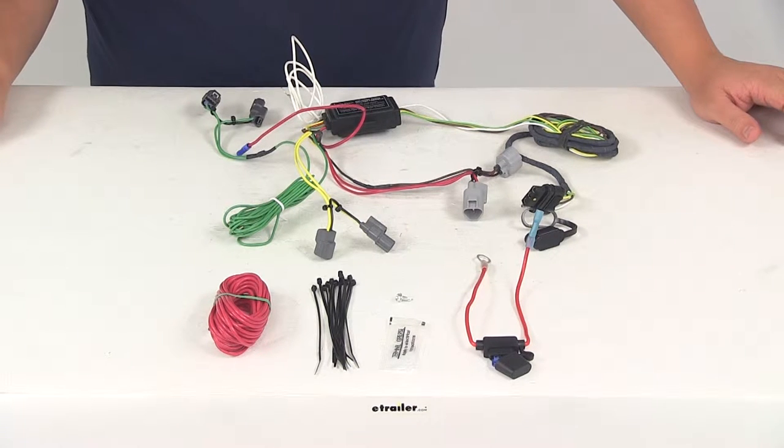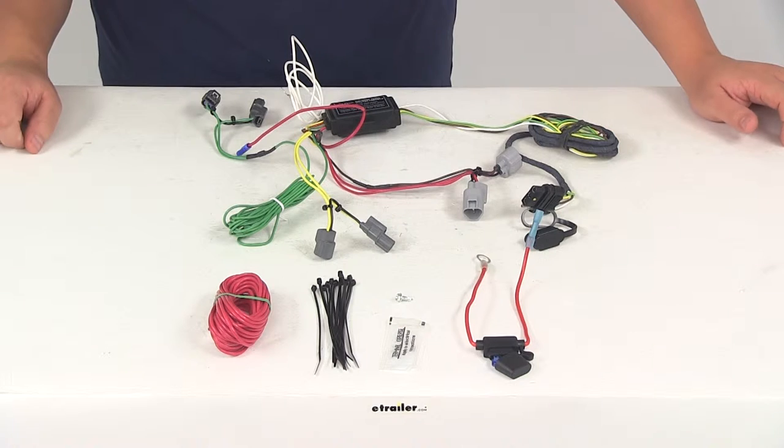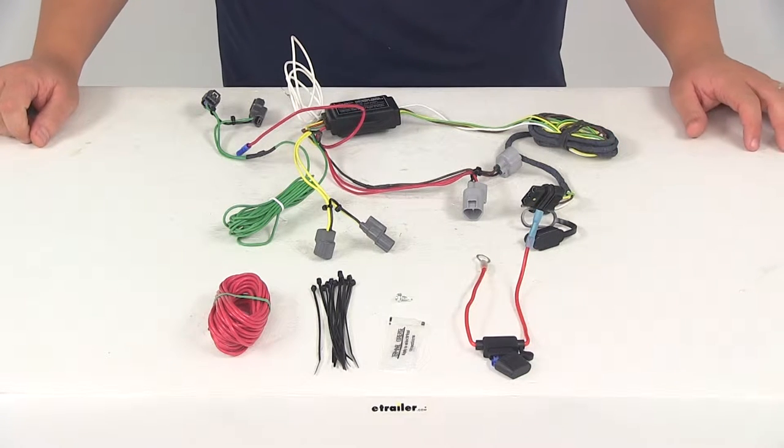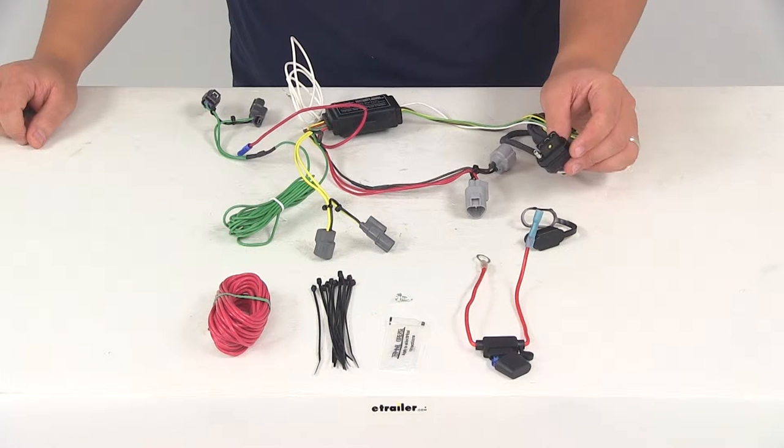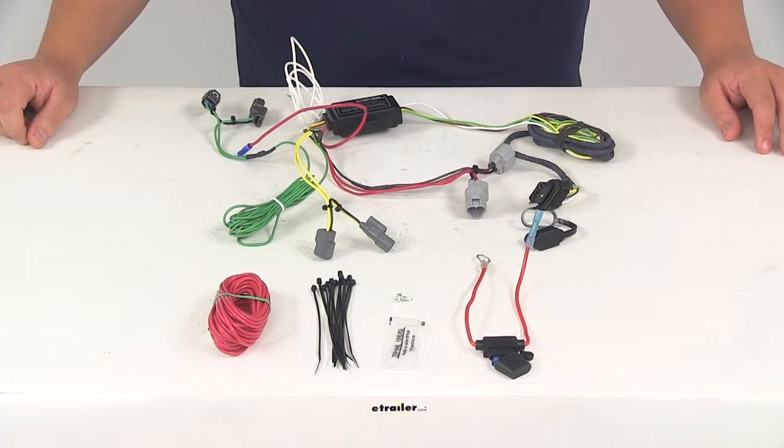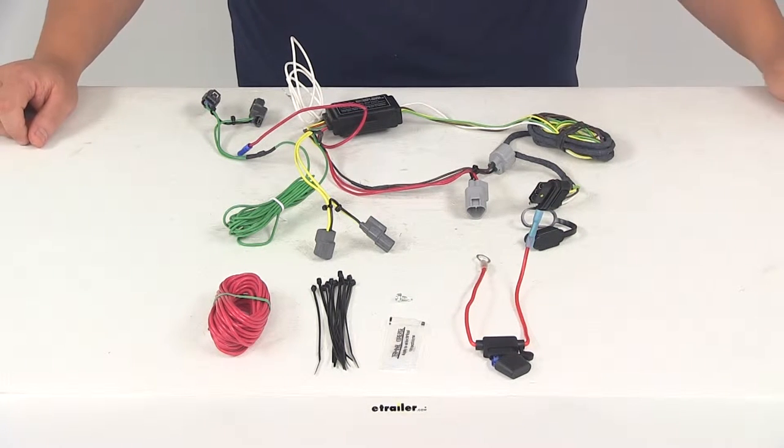Today we're going to be taking a look at part number HM11143690. This is the Hopkins Plug-In Simple Vehicle Wiring Harness with a four-pole flat trailer connector. This product is going to fit certain years of the Nissan Pathfinder.